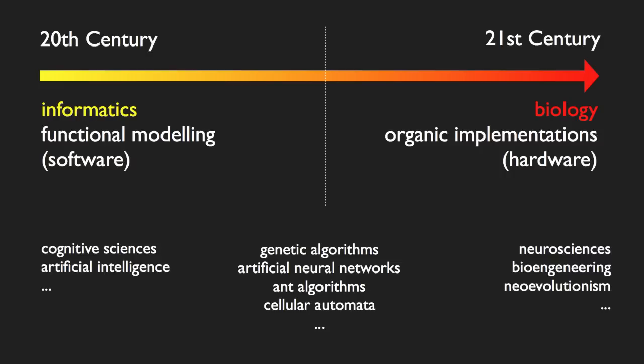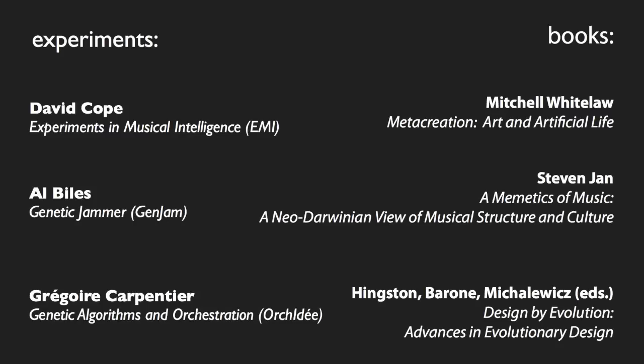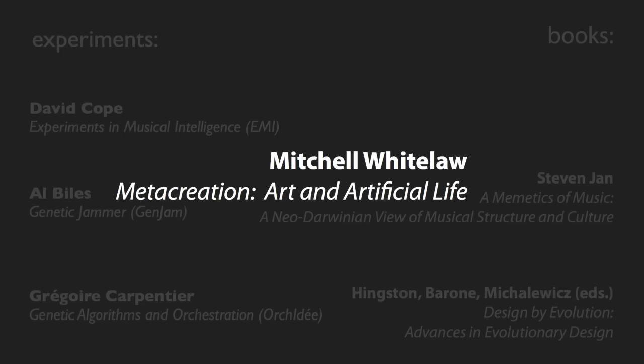Genetic algorithms are very useful in any kind of design — graphic design, whatever. Just to highlight a few examples: musical composition, musical improvisation, and orchestration — very concrete examples. There is a name given to this approach: metacreation. You might want to read about it, for example, in a book written by Mitchell Whitelaw.